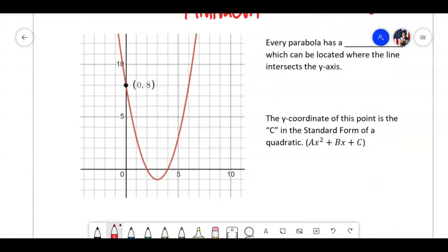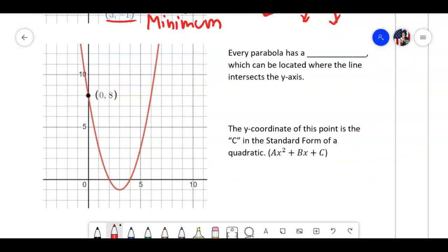Now, second part, same graph, but we're talking about: every parabola has a blank, which can be located where the line intersects the y. What do you call it when it intersects the y? Y-intercept. I'm recording for this, so y-intercept. Now, on the picture, it's over here. We're talking this y-axis, so this is the y-intercept. Another way to tell is when x is 0, what's y? Exactly.